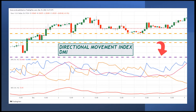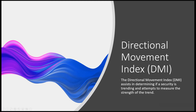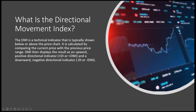DMI and DMI are part of Wells Wilder's Directional Movement System. DMI is a technical indicator that is typically shown at the bottom or above the price chart. It is calculated by comparing the current price with the previous price range. DMI then displays the results as an upward positive directional indicator and a downward negative directional indicator.